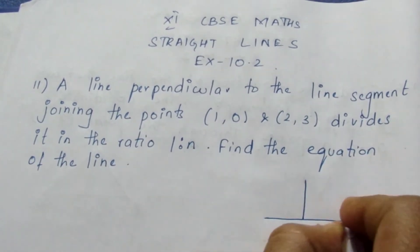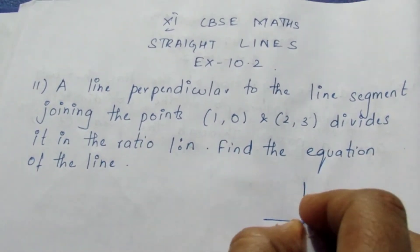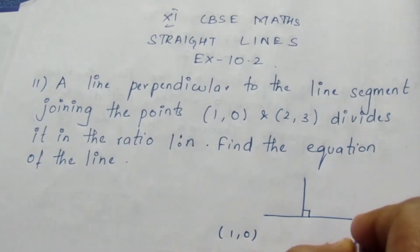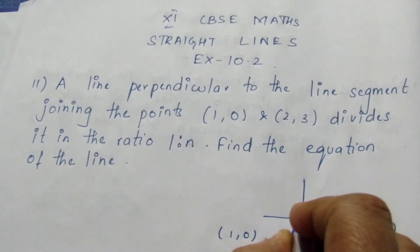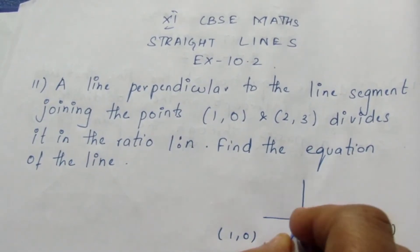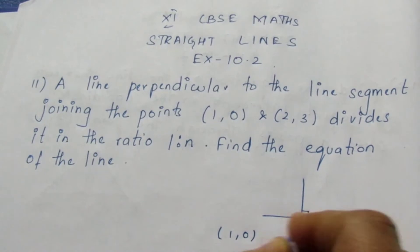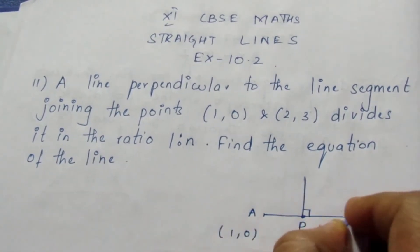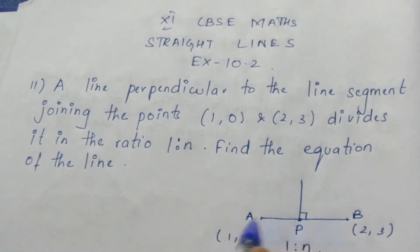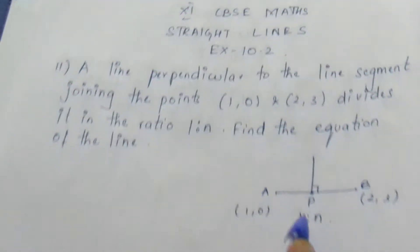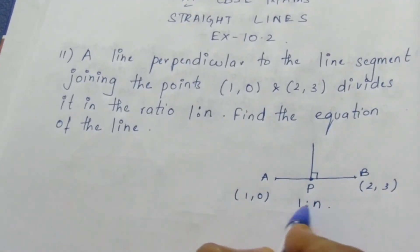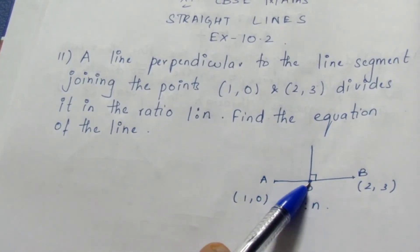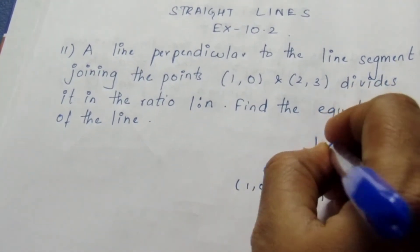Now they have given a line perpendicular to the segment joining (1, 0) and (2, 3), and this point P divides it in the ratio 1 is to N. So if I take this to be A and this to be B, AB divides P in the ratio 1 is to N. Now we can find the point P. They are asking the equation for this line.